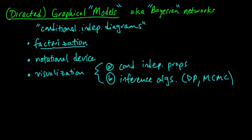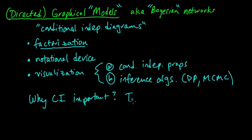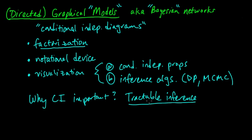So why do we care so much about conditional independence? The reason is tractable inference. When you have nice conditional independence properties for your distribution, you can do inference much more efficiently by exploiting those properties. That's really what it all comes down to — being able to efficiently do inference.